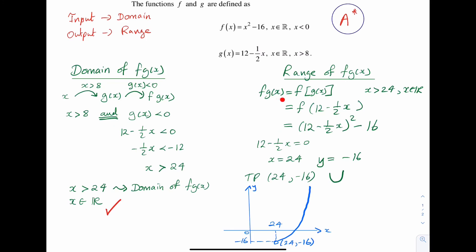After sketching fg(x) equals 12 minus a half x in brackets squared minus 16 for this restricted domain, I get something like this. Notice that the circle over here is not shaded because x equal 24 is not included in the domain.